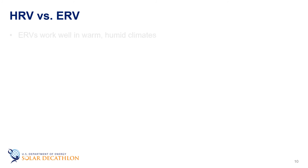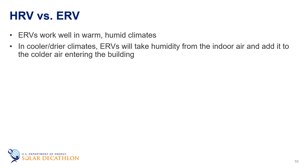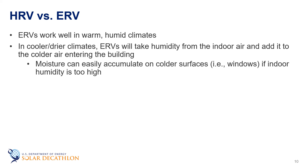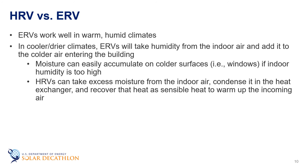As a caution, however, this works well in humid climates. As the climate becomes cooler and the heating loads dominate, the energy recovery ventilator will take the humidity from the air and add it to the cold air entering the space. You must be careful here as humidity can build up in the space, as humidity is generated from cooking, bathing, and perspiration. Too much humidity in the space will start to condense on cooler surfaces such as windows — this is an indication that there is too much humidity. A heat recovery ventilator can take this excess moisture, condense it in the heat exchanger, and recover that heat as sensible heat to warm up the incoming air.